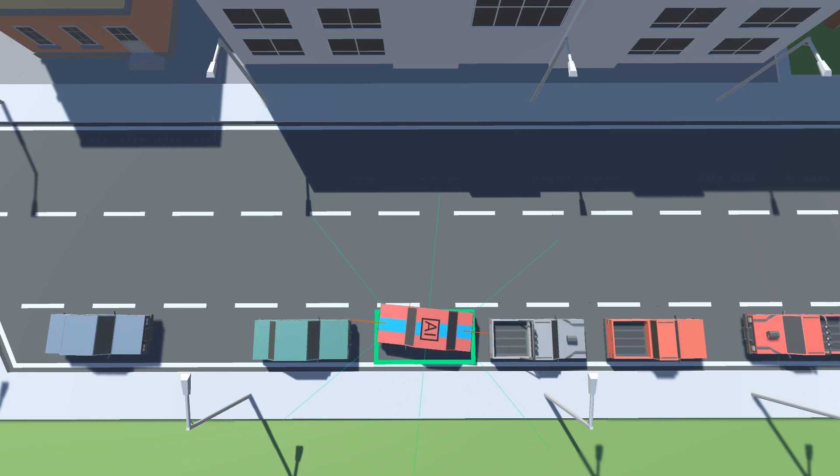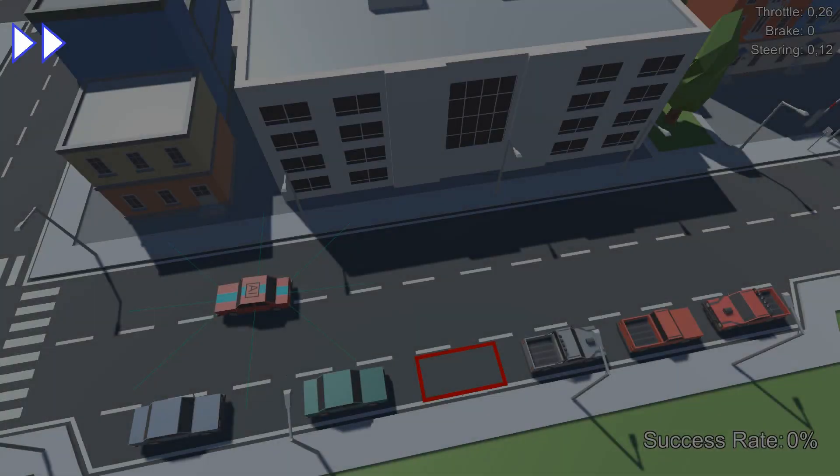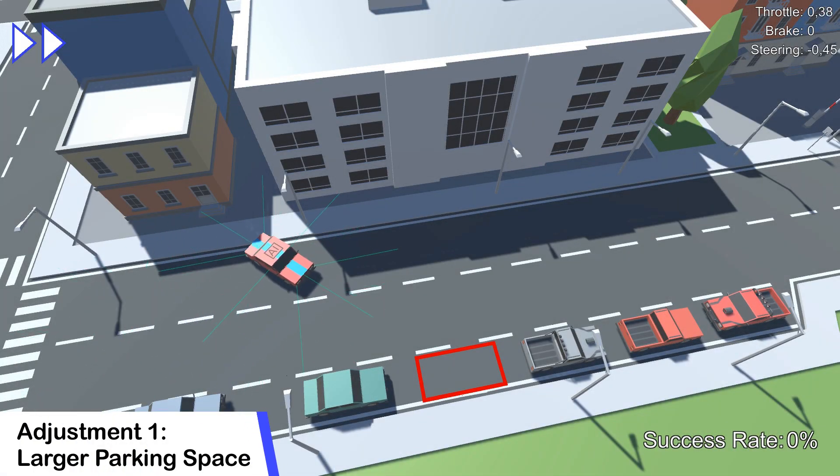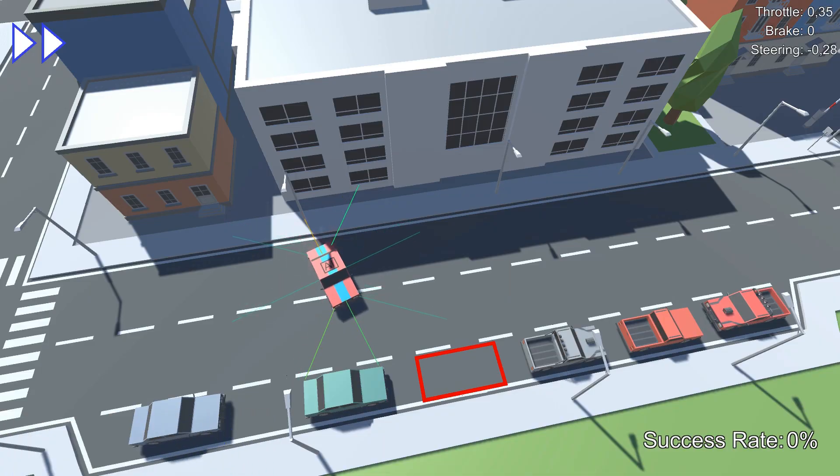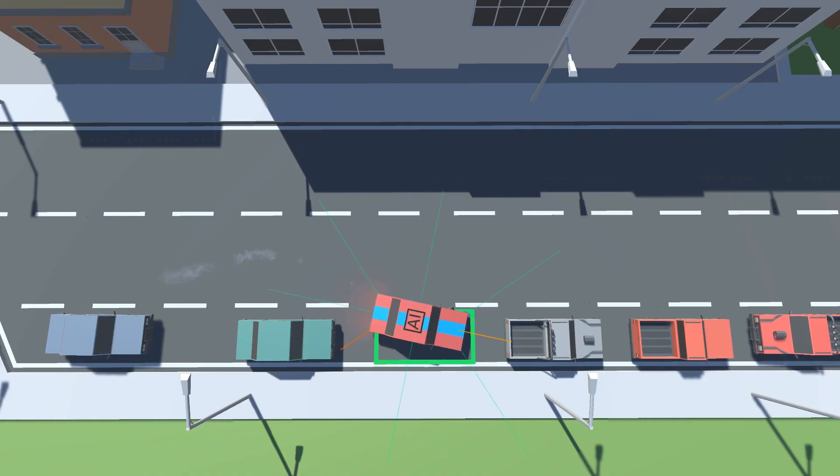Obviously I was not satisfied with that, so I started trying out different things. And the first thing I tried out was increasing the parking space in order to make it a bit easier for the AI. This led to an immediate increase to 100% success rate, but the final positioning of the car is still pretty bad. It's still a bit too close to the main road and its final rotation is also still not perfect.